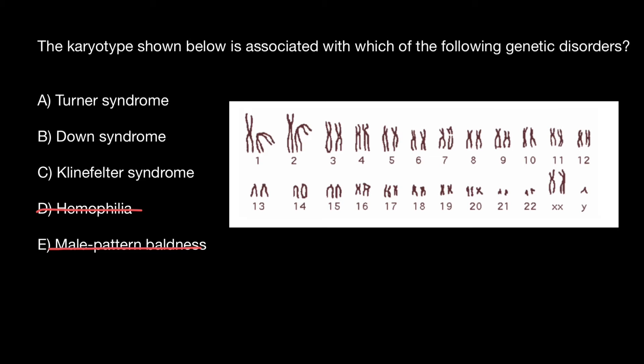Down syndrome, as you know, is caused by an extra chromosome 21 — we also call this genetic disorder trisomy 21. But we see this person has two chromosomes 21, so this is not Down syndrome, and we can cross out this variant as well.